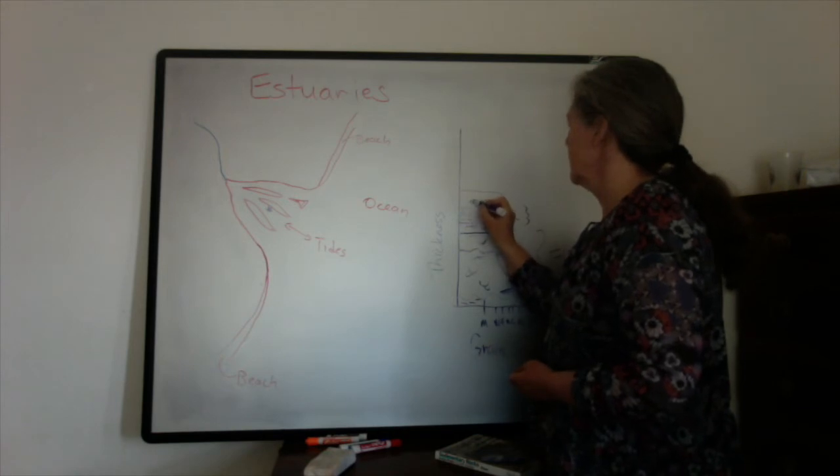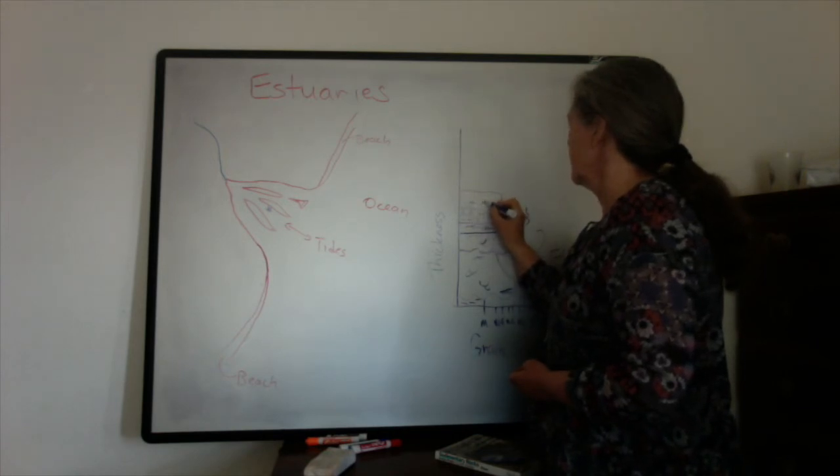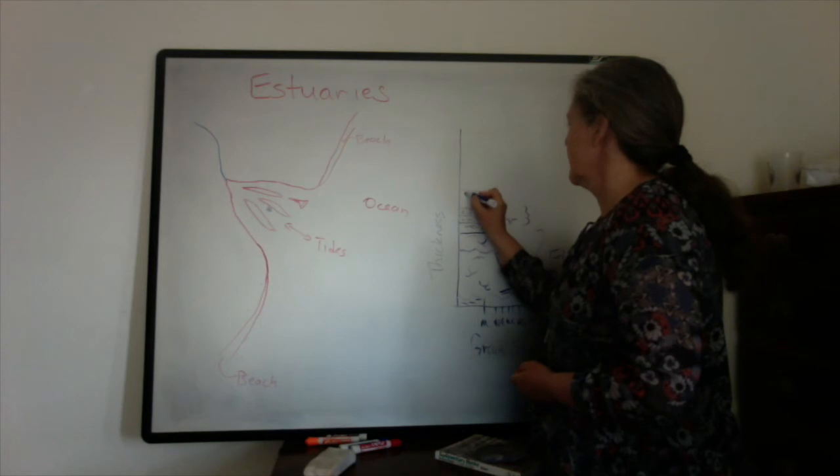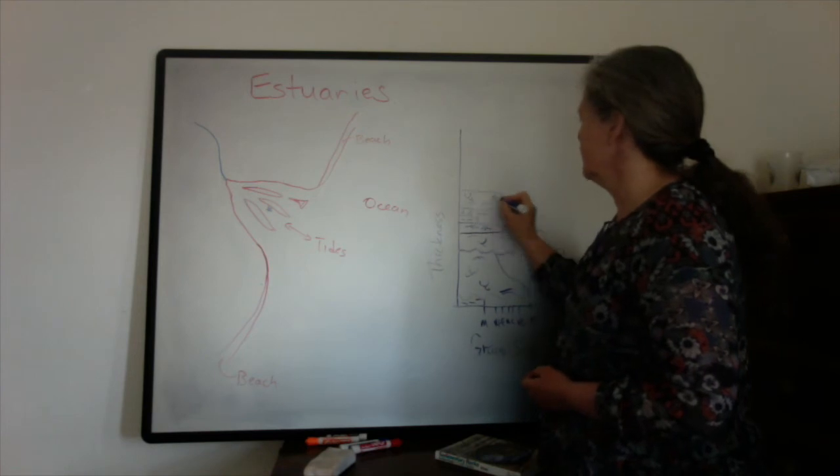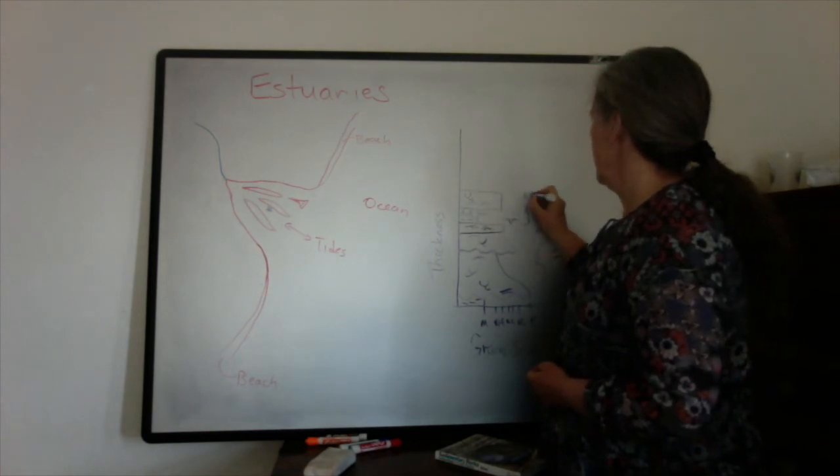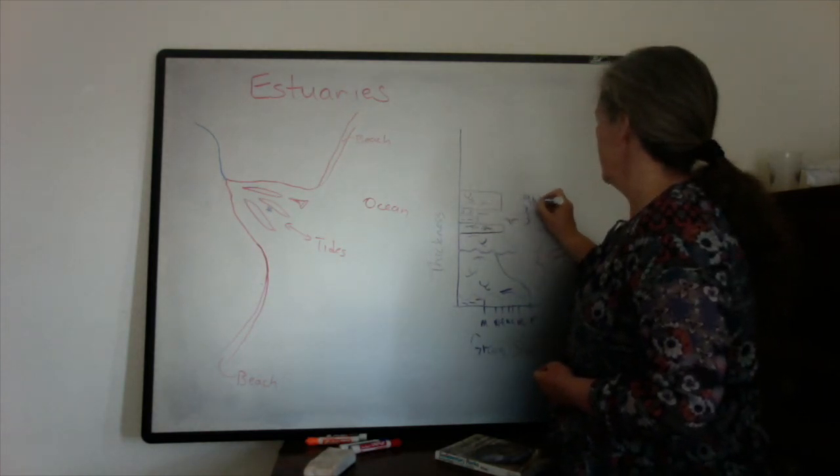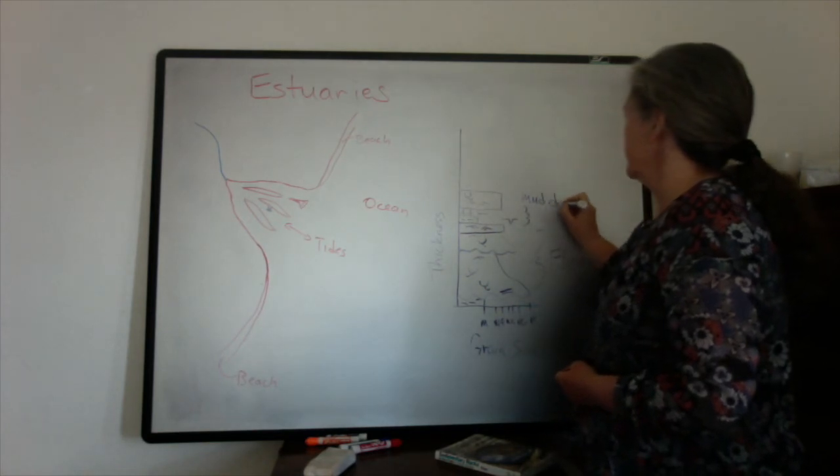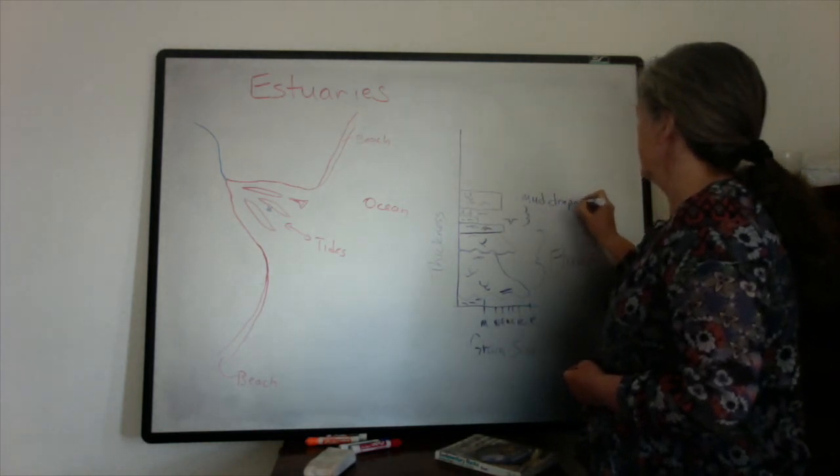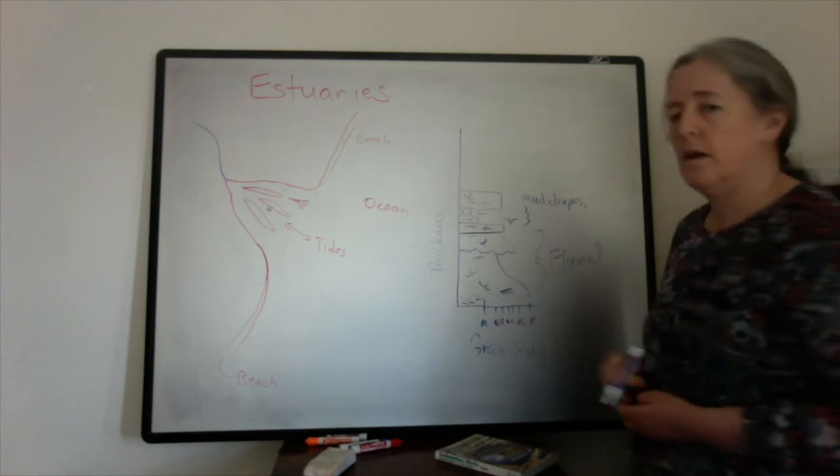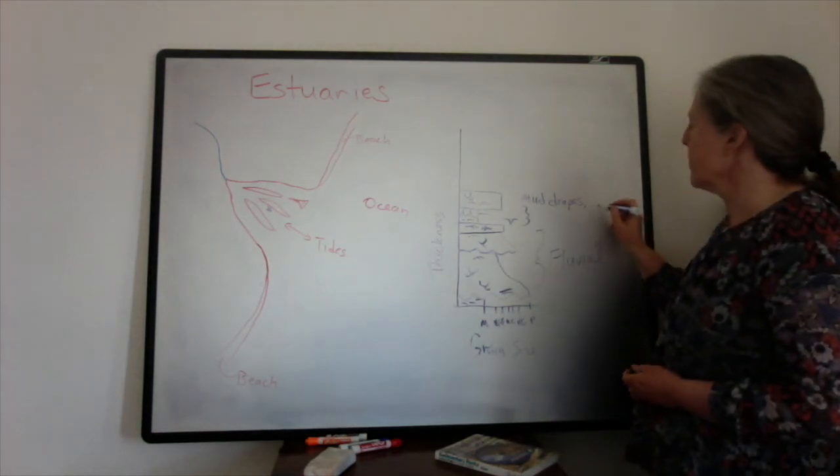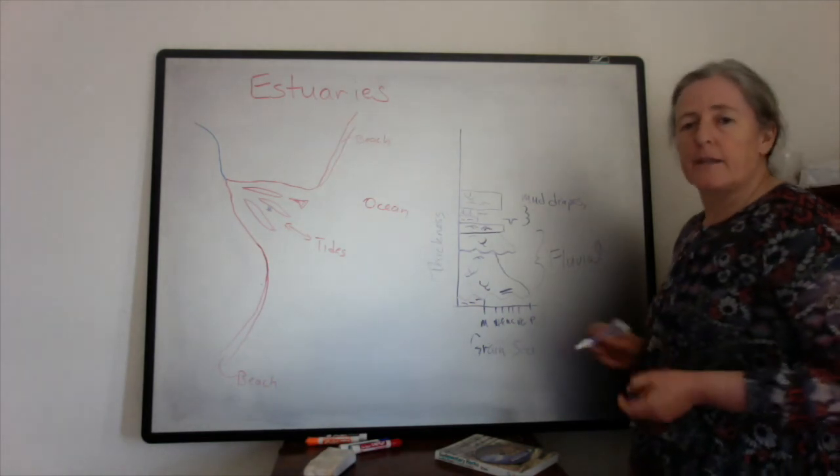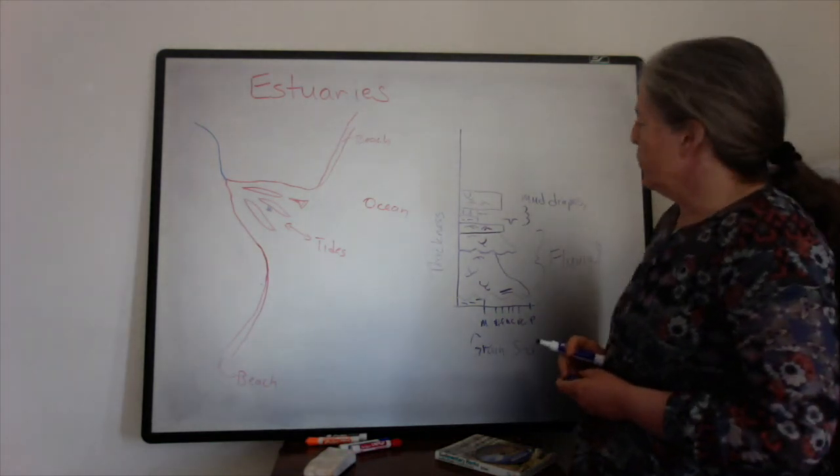Including the ripple cross lamination. Sometimes you can also get trough cross stratification. And then maybe there's some mud drapes in that zone as well, and reactivation surfaces would be another feature.